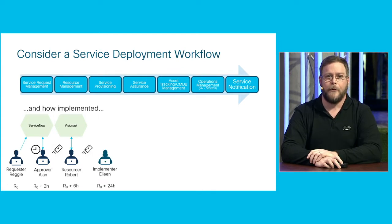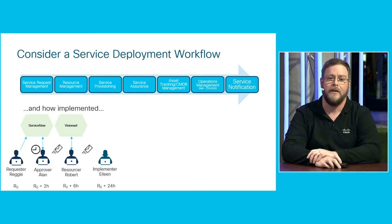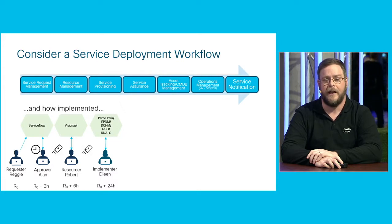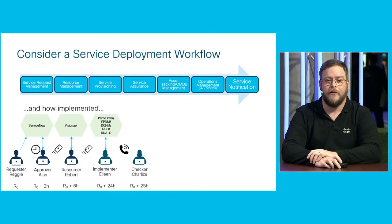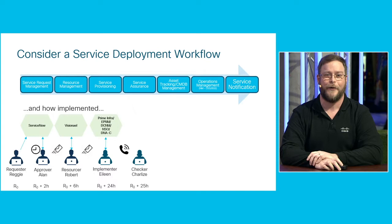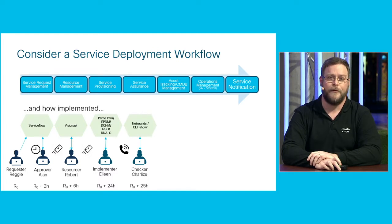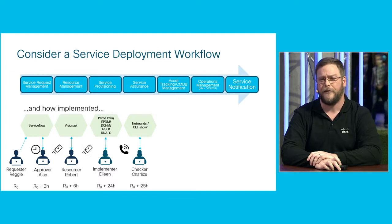After Resourcer Robert does his thing, he sends an email over to Implementer Eileen, who is responsible for the implementation of the service and the provisioning thereof. She's going to use any number of tools — it could be tools from Cisco like Prime Infrastructure, NSO, DNA Center, or other tools available to her. Then after she's done, she calls up Checker Charlize. Now we're 25 hours into this workflow, manually handing off tasks person to person, using different tools. Checker Charlize then does her service assurance check, maybe using a tool like NetRounds or manually running various CLI show commands.